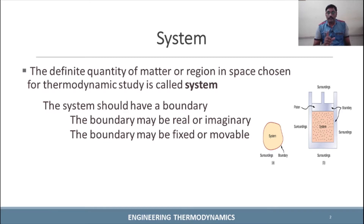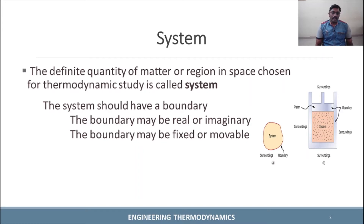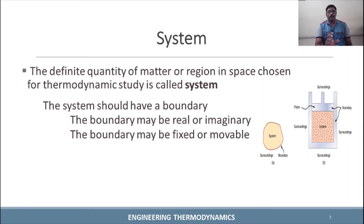The system should have a boundary. There is a condition: when you define a system, it must have a boundary around it. The boundary can be imaginary. The real boundary or the imaginary boundary — that is the boundary. The boundary can be fixed.